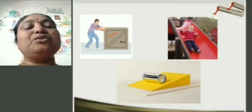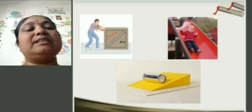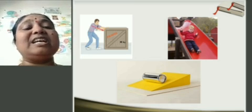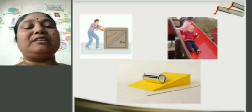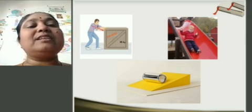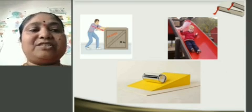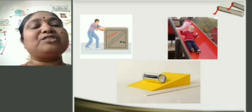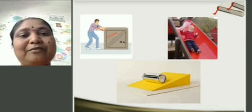Here we can see: a heavy box being pulled by a person and sliding — that is sliding friction. The first type is static friction, the second is sliding friction, and the third is rolling friction.